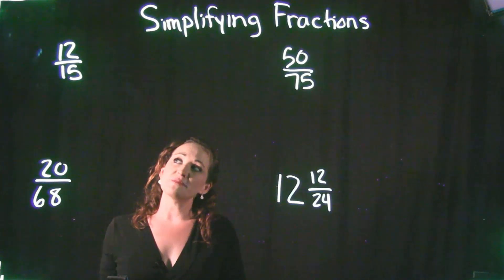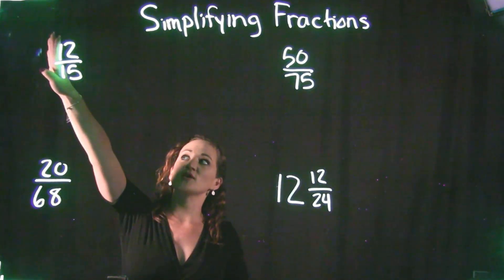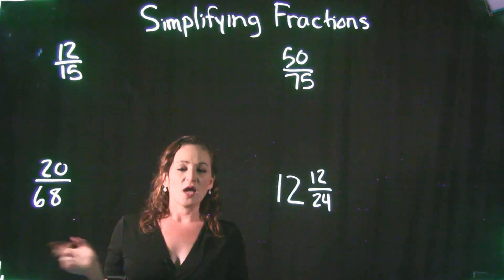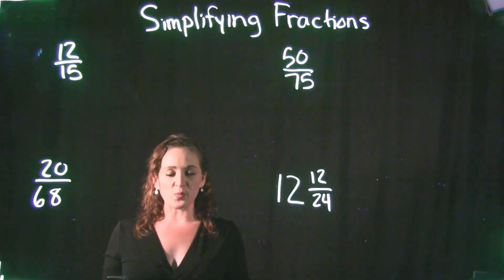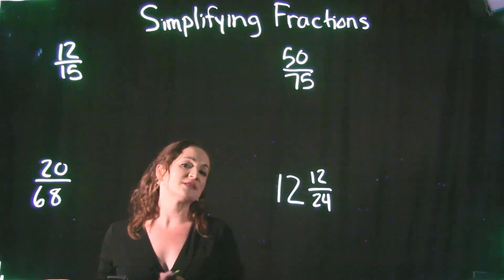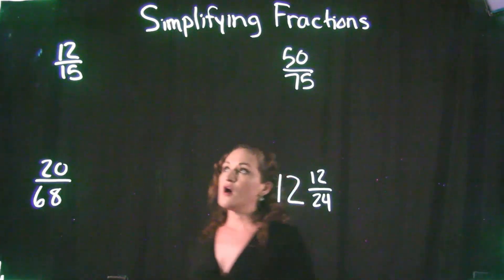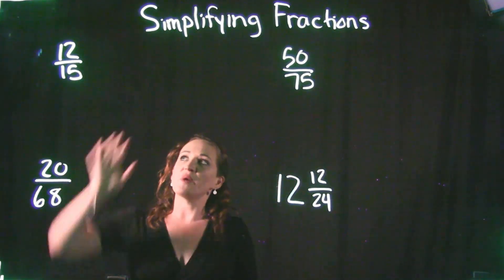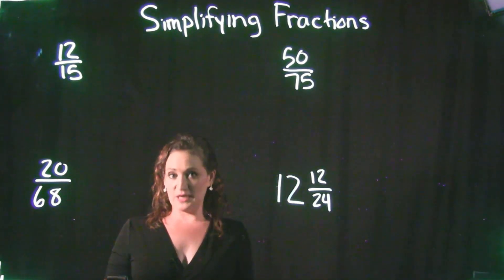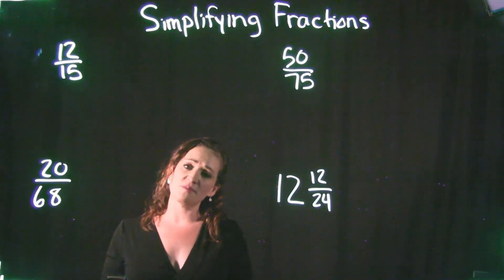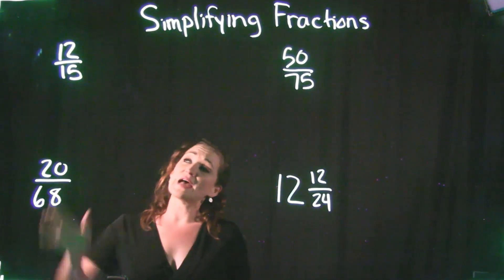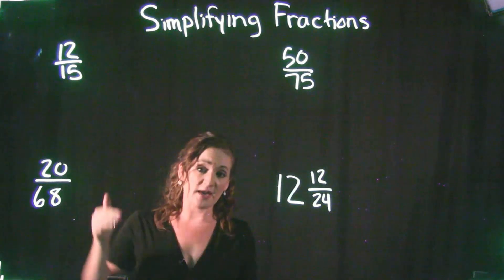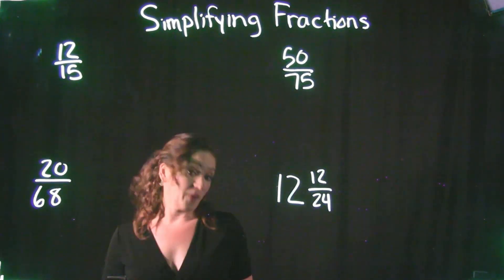So when it comes to simplifying fractions, we want to look at the numerator and the denominator and see if we can come up with the same number that would divide out of both of them. For example, if both the numerator and the denominator were even numbers, every even number can be divided by 2. So it has to be a number that is smaller than it, but a number that could go into both of them.